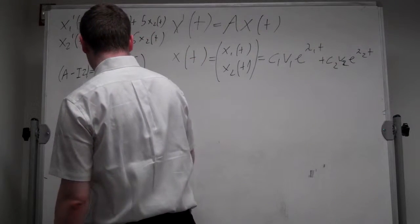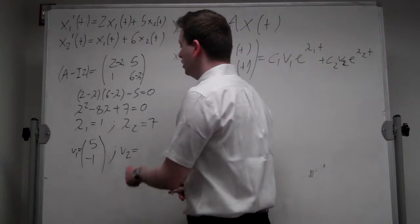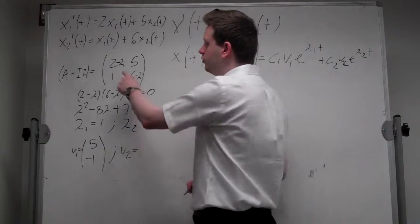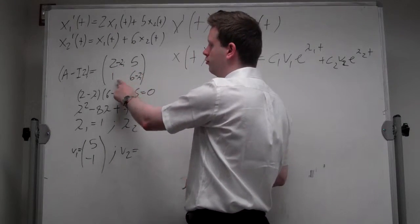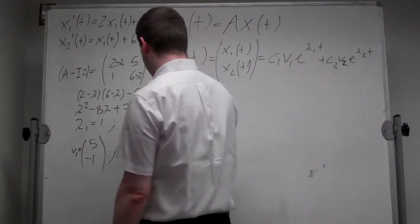And for the second one, we subtract 7, we get minus 5, 5, and 1, minus 1, so our vector is simply 1, 1.